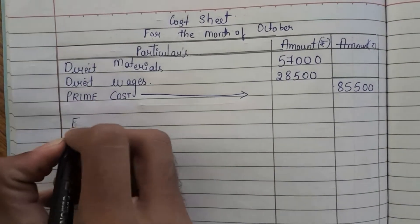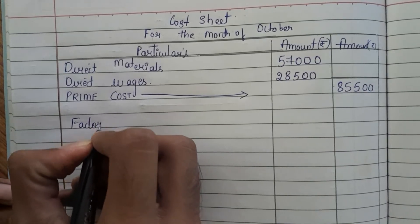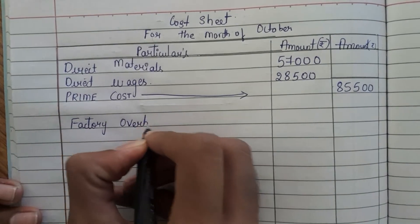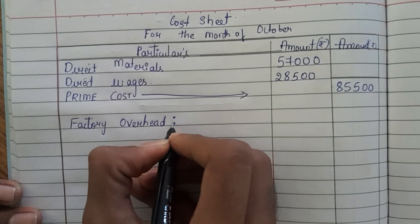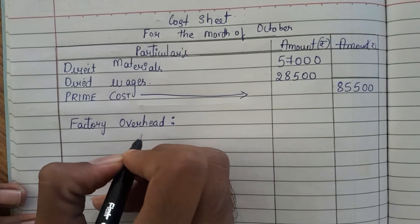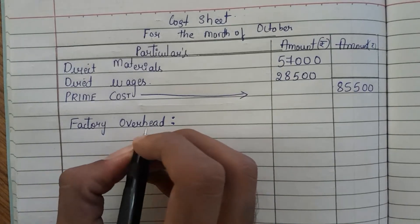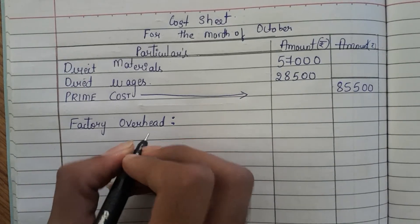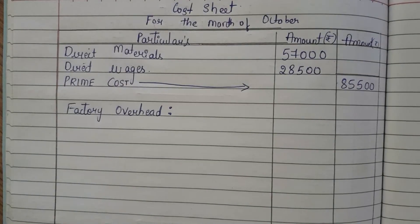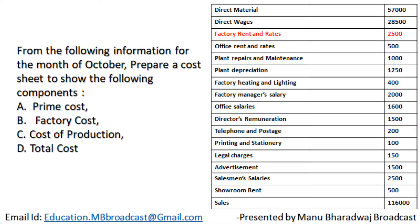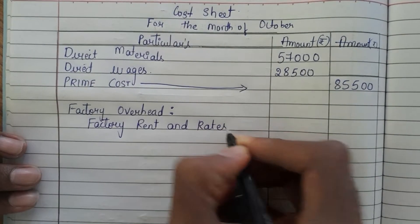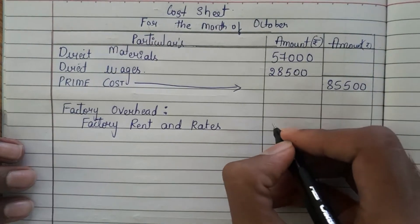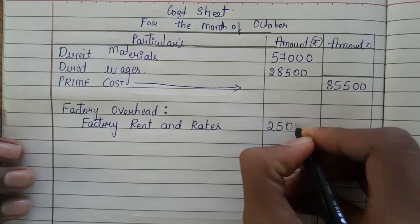The next step is to add all the factory overheads. First write prime cost, then factory overheads. The expenses related to factories should be mentioned here. Now see the question — the first one is factory rent and rates.